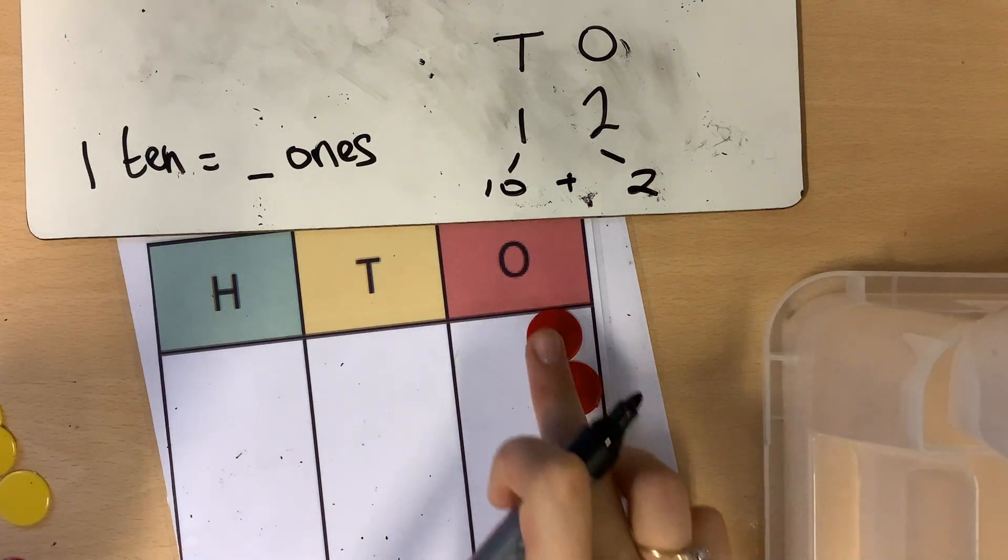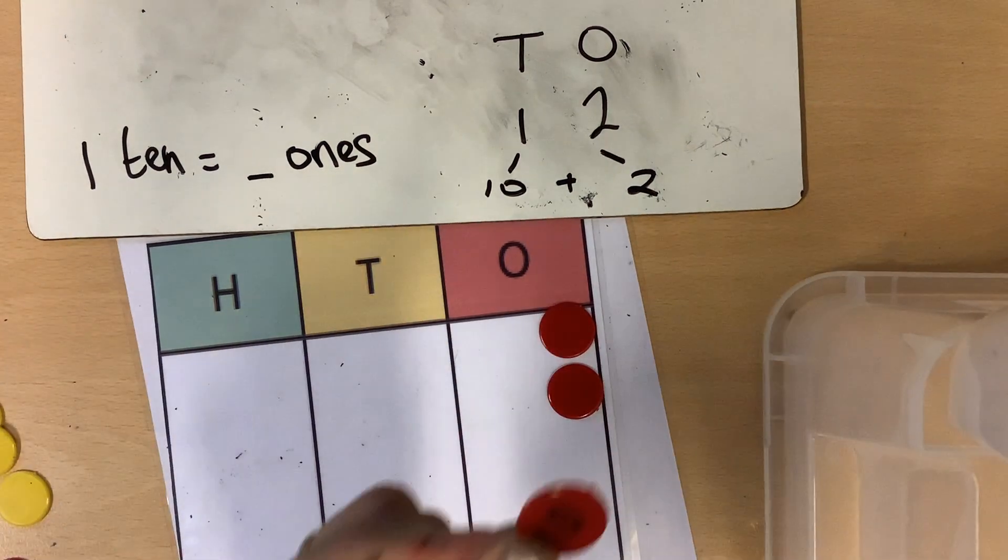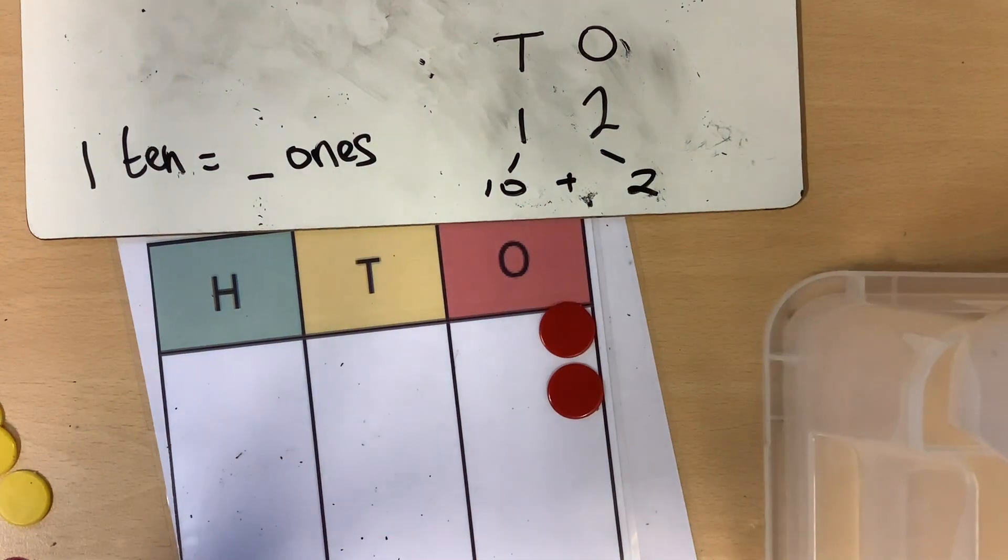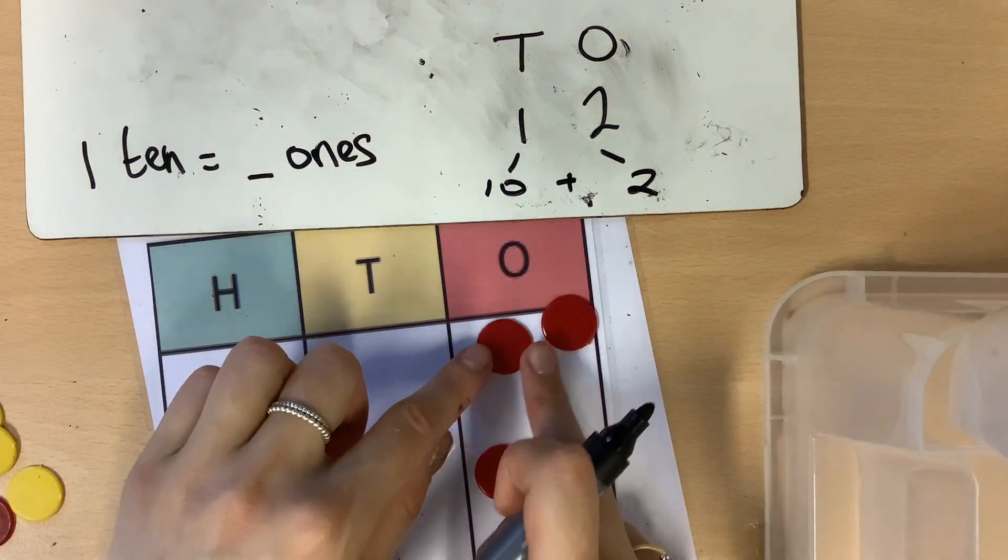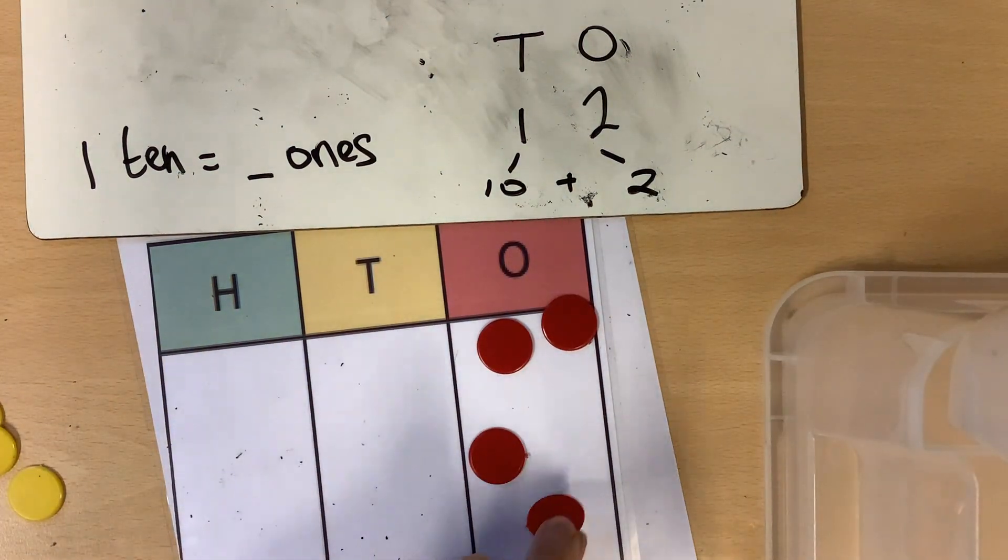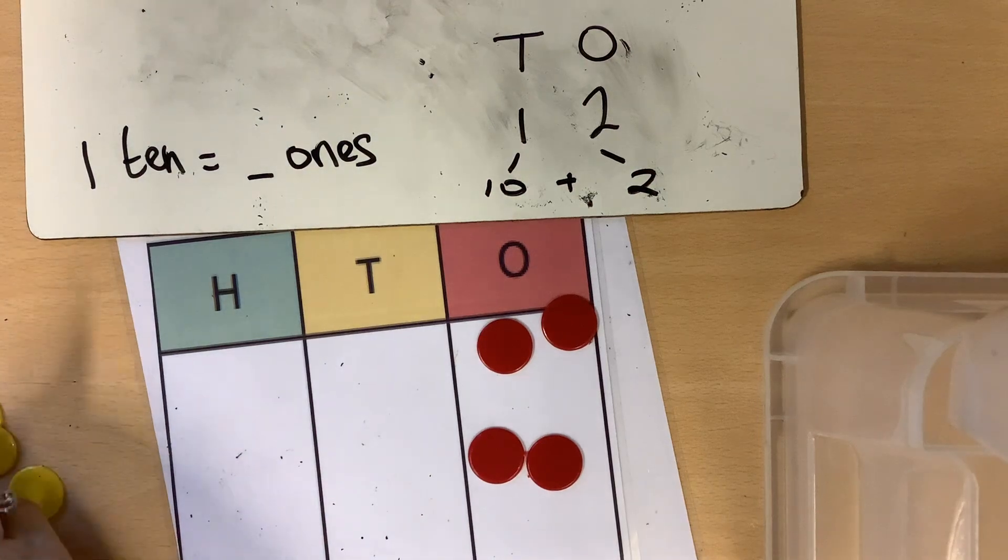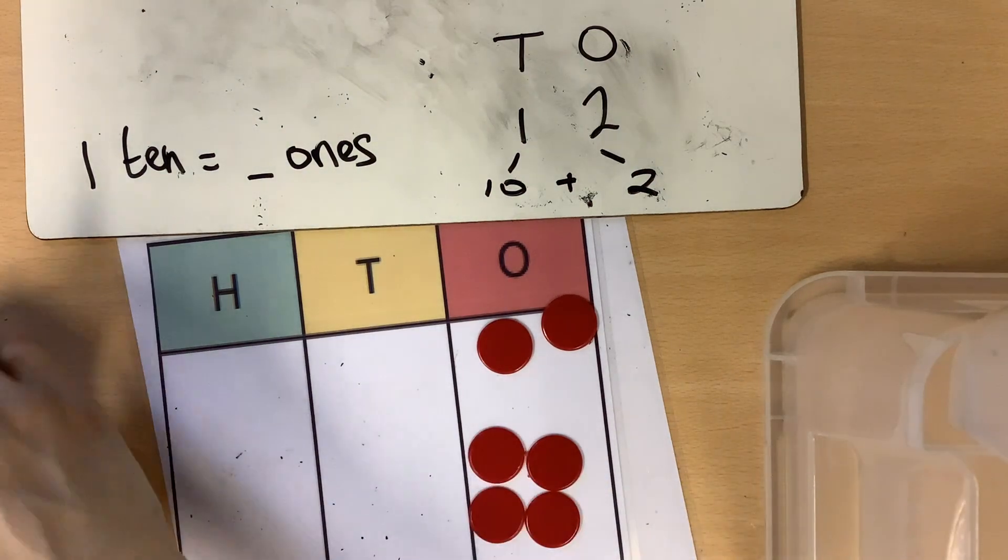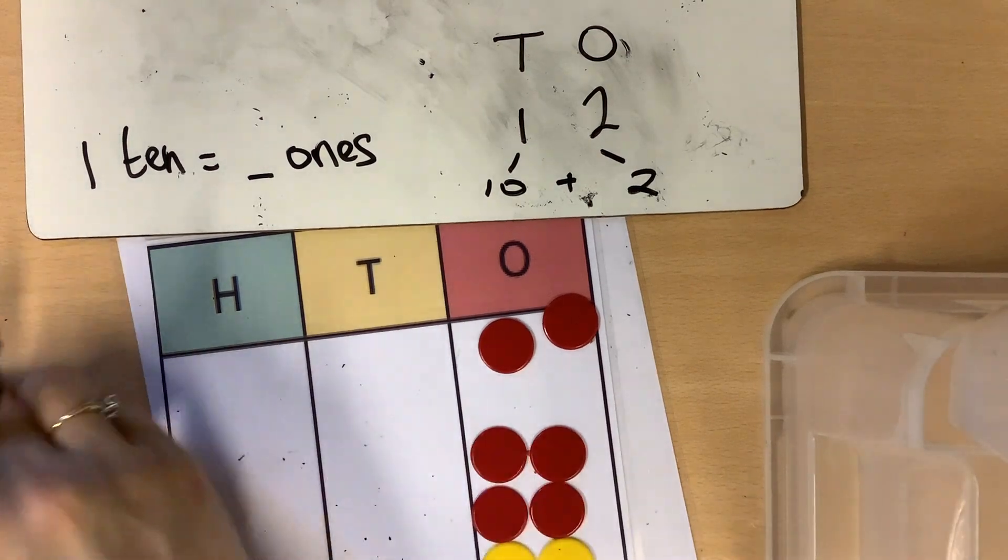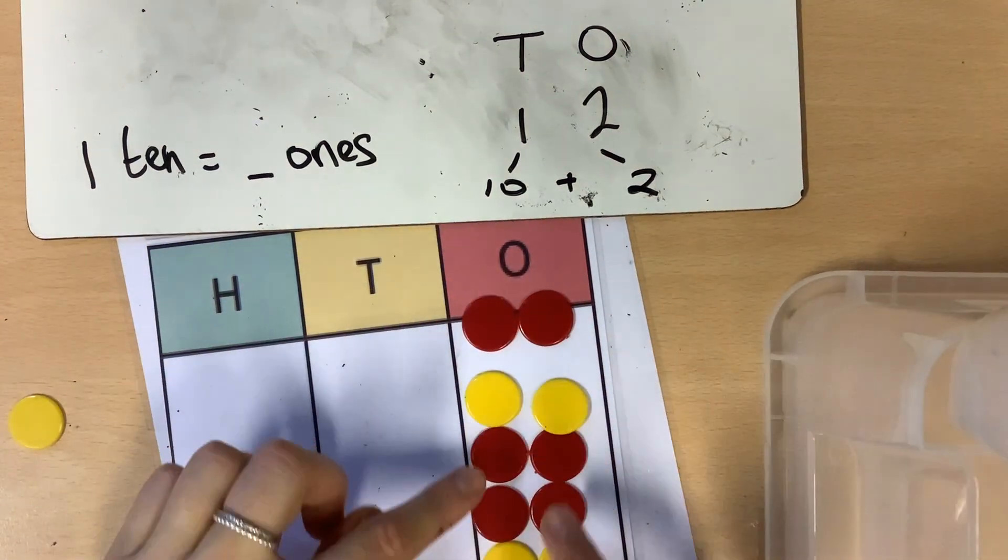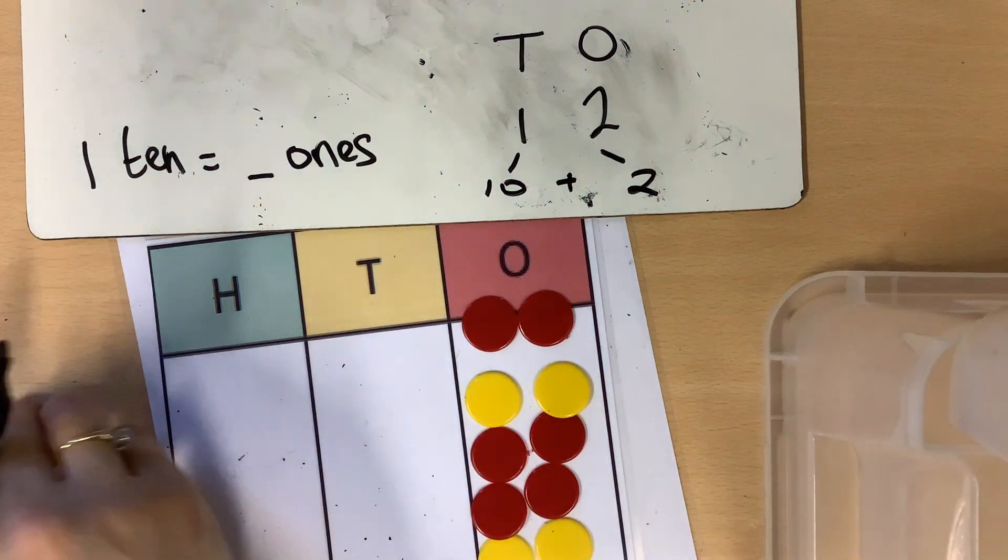So I already have the 2 there. I'm going to do a fair swap and change this 1 ten for 10 ones. I'm going to keep them away from these 2 counters because I know that's not part of my 10. 2, 4, 6, 8, and 10.